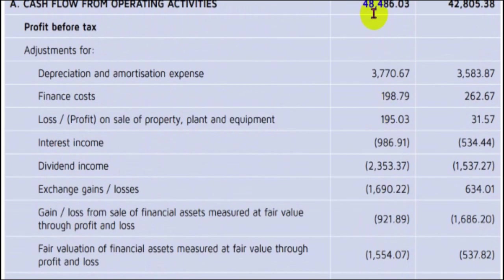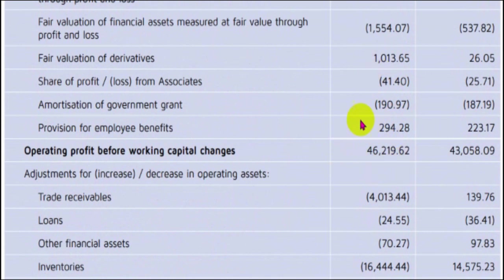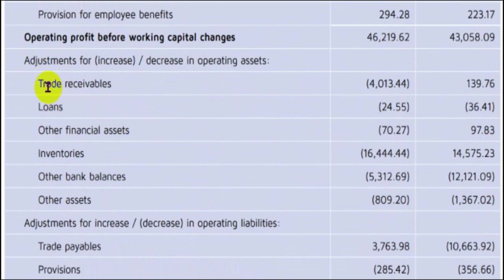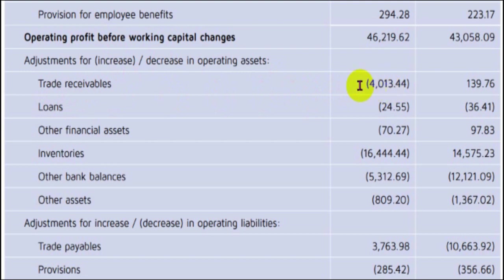After a few adjustments the cash from operating nature was around 462 crores. Now working capital changes are applied. Trade receivables of 40 crores were shown as sales but not actually received in cash, so they are deducted. This clearly shows that 40 crores of sales was not collected in cash that year.